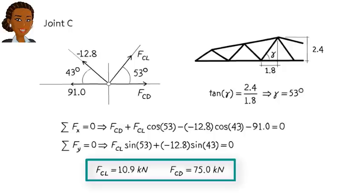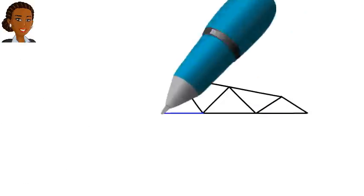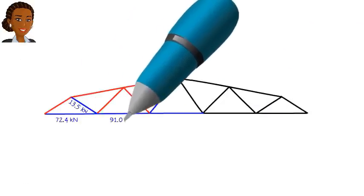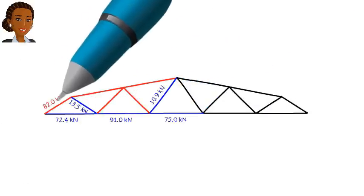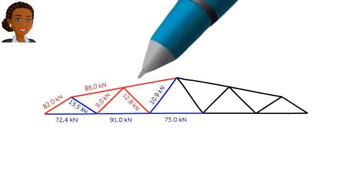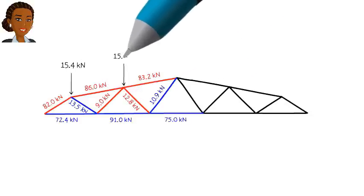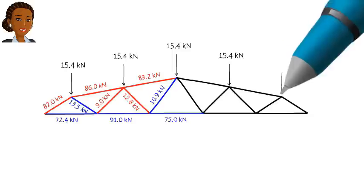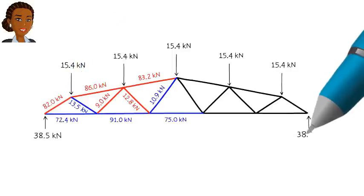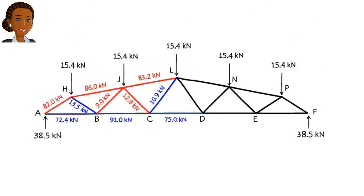We are done with our analysis. Let's summarize our findings by writing the member forces on the truss, like this. Tensile forces and members are shown in blue, and compressive forces and members are shown in red.